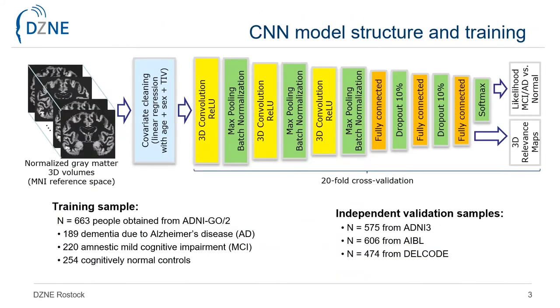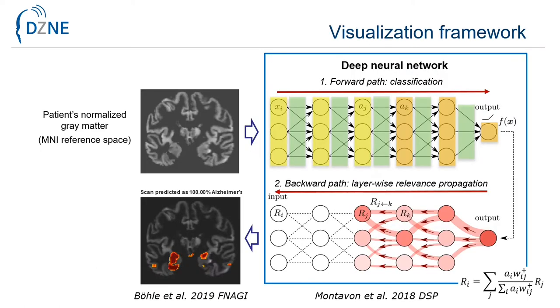Our neural network was implemented in Keras and TensorFlow. The model structure is based on the popular AlexNet model for 2D image classification.